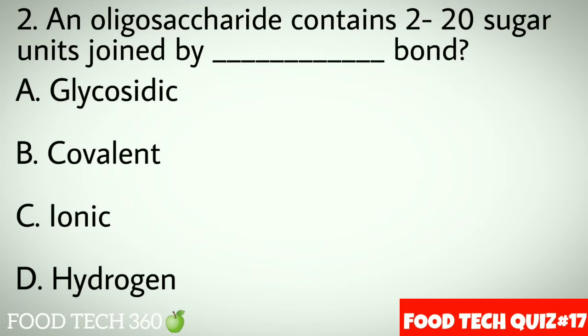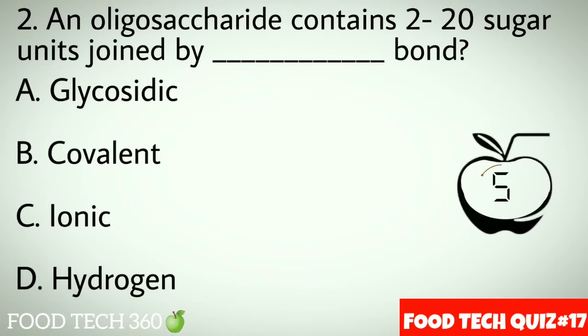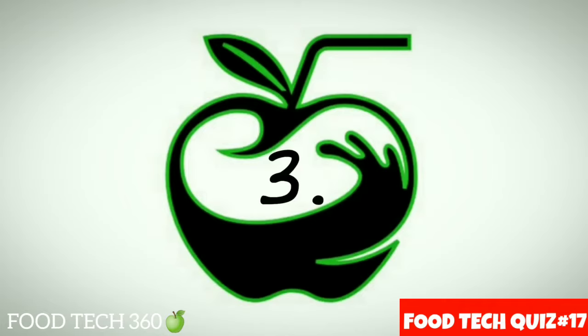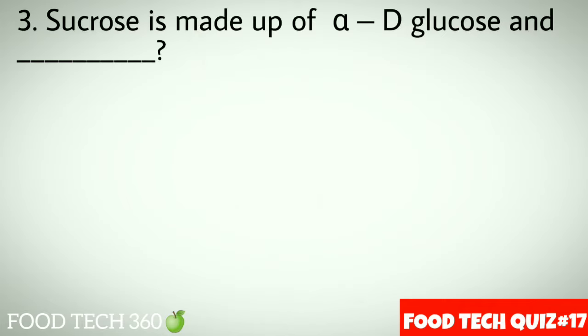Question number 2: An oligosaccharide contains 2–20 sugar units joined by a dash bond. A. Glycosidic, B. Covalent, C. Ionic, D. Hydrogen. Correct answer: A. Glycosidic.